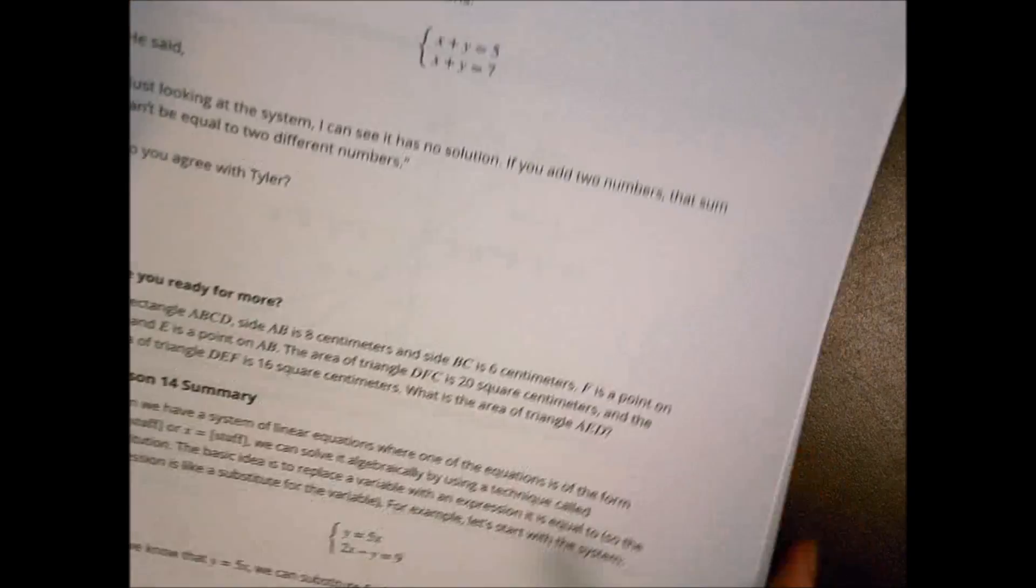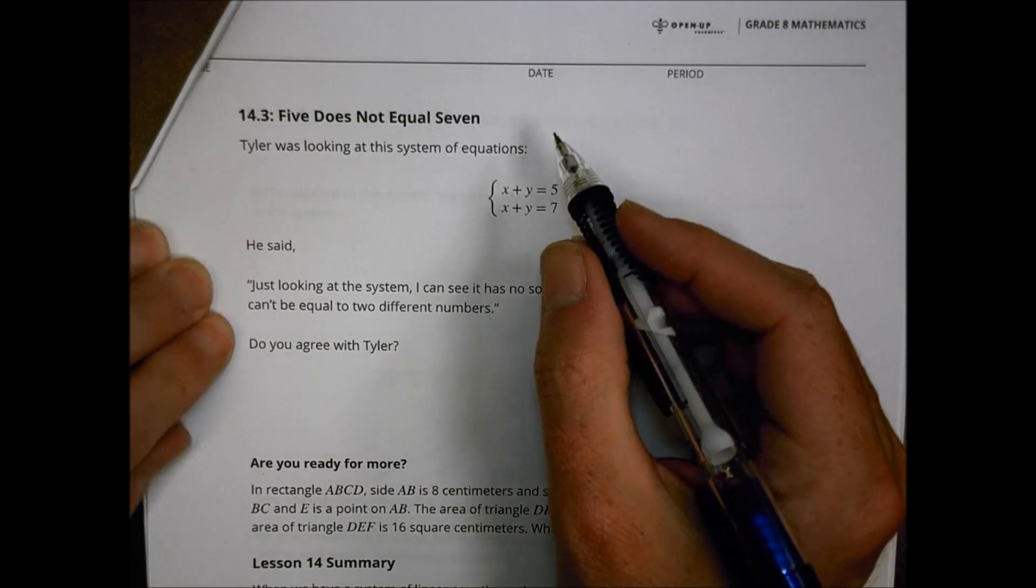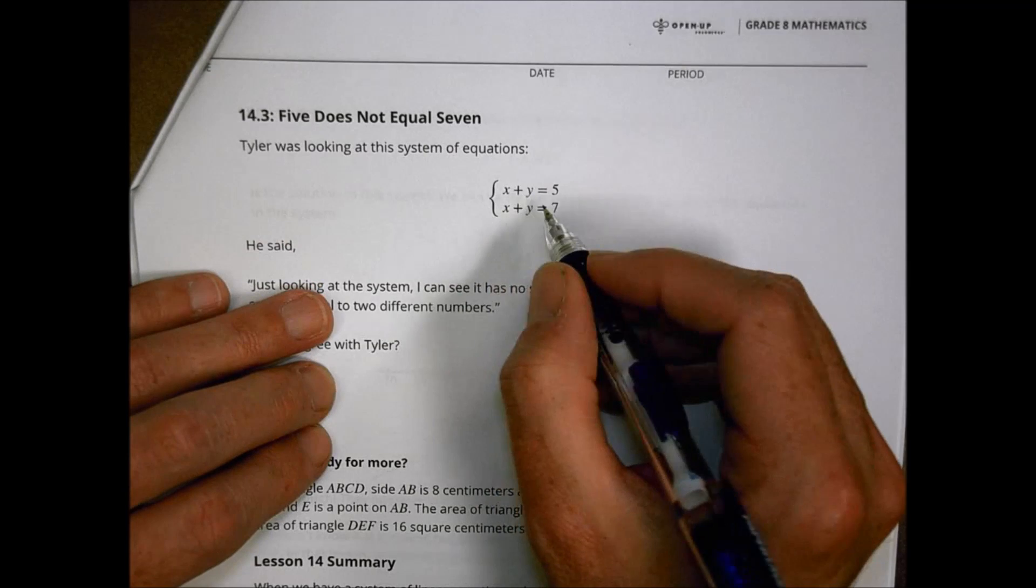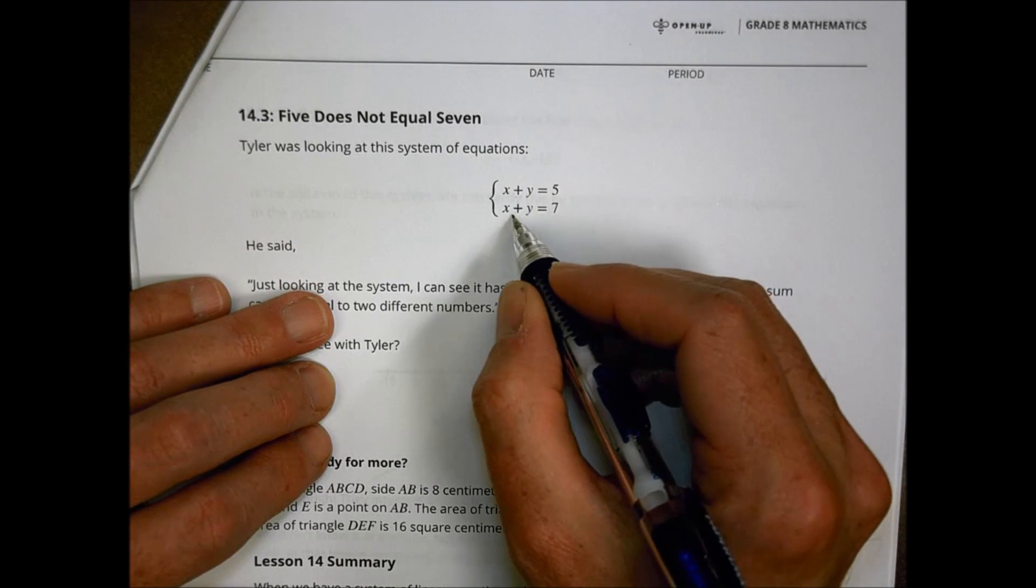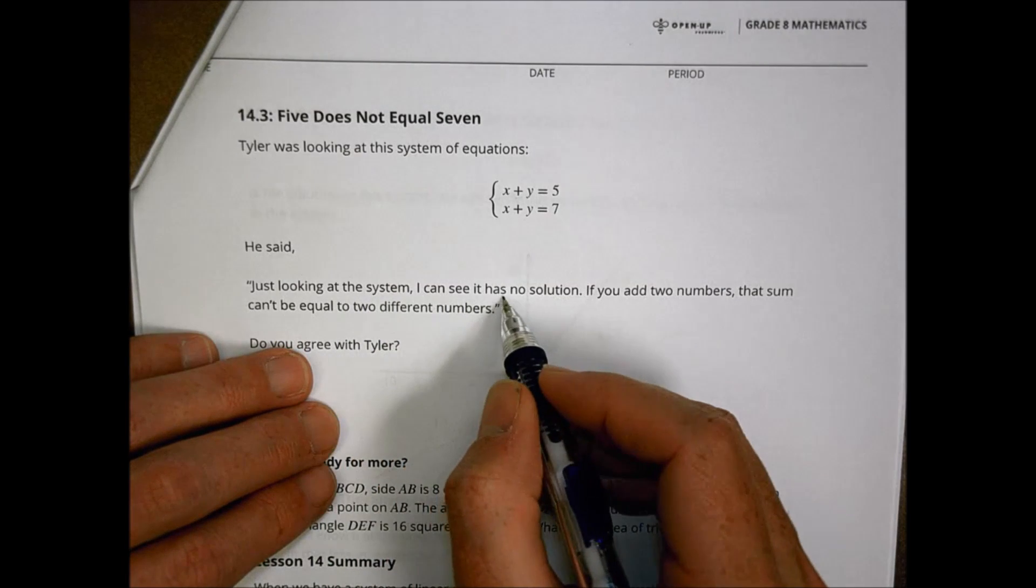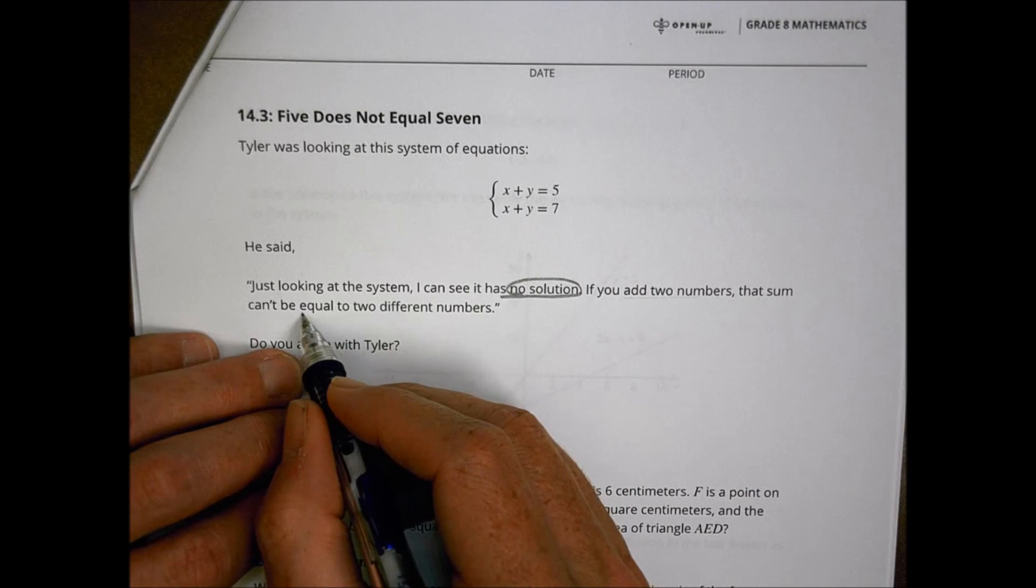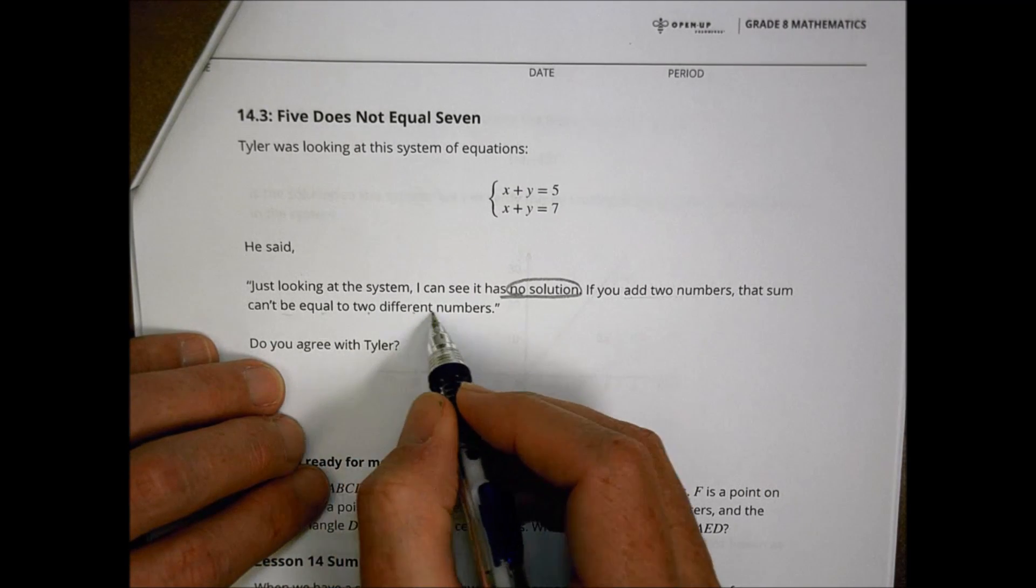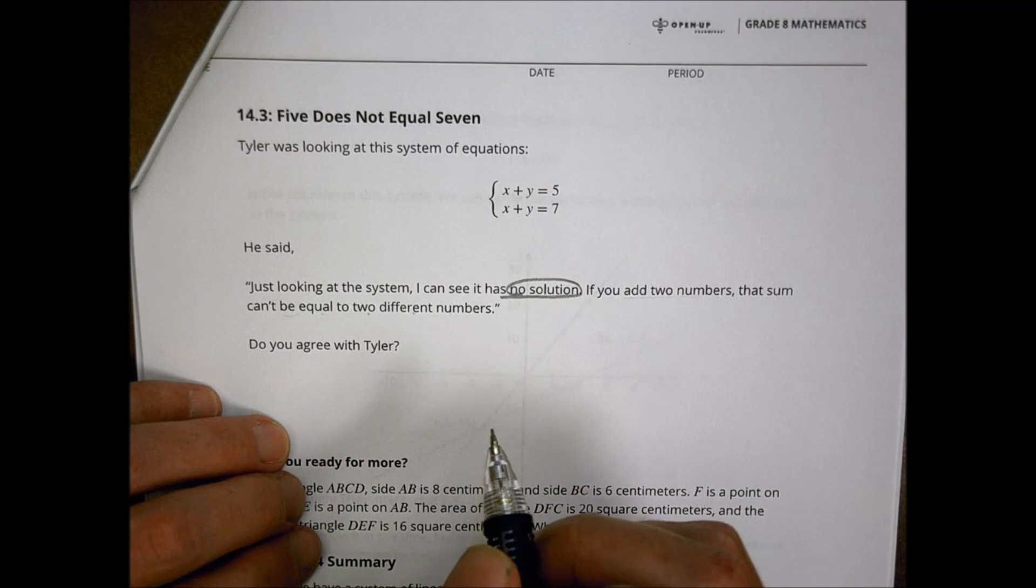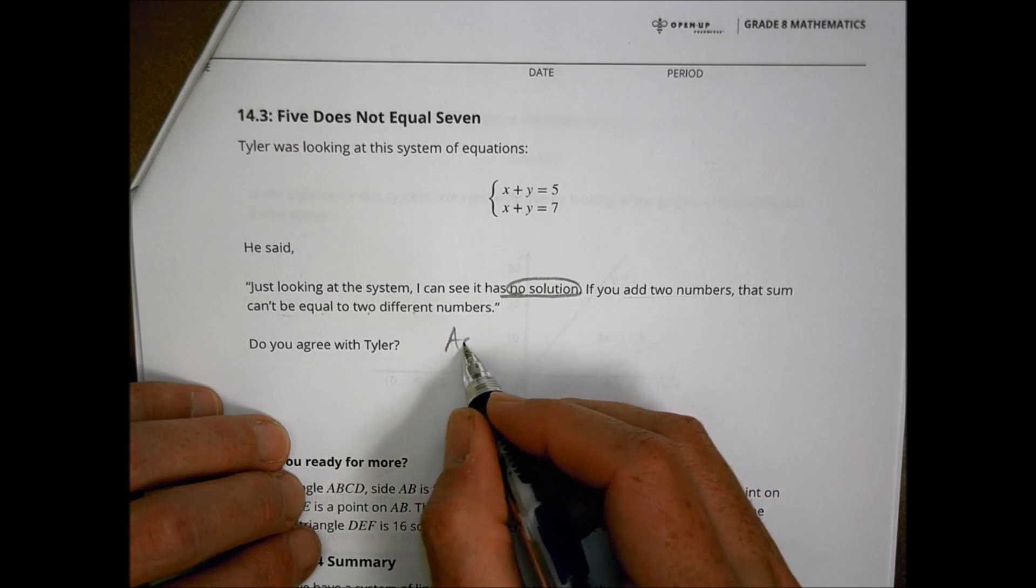In section 3, it says 5 does not equal 7. Wow, what a surprise. Tyler was looking at the system of equations x plus y equals 5, and x plus y equals 7. He said, just looking at the system, I can see it has no solution. If you add two numbers, that sum can't be equal to two different numbers. Do you agree with Tyler? And we'd probably say I would probably have to agree with Tyler.